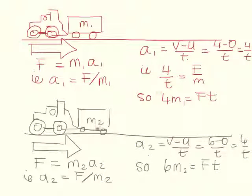If we follow the same procedure in the second carriage, we get that 6M2 equals FT.